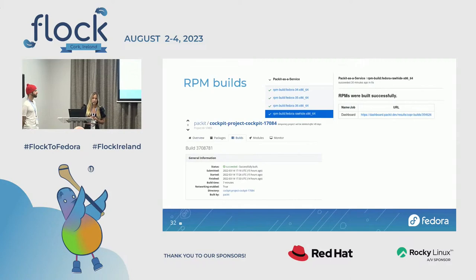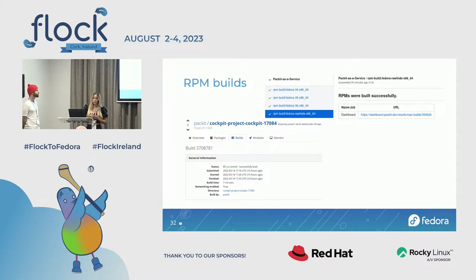After setup, what can Packit do for you? The most used job is RPM builds. For RPM builds, Packit uses the COPR build system. You can configure Packit to build your RPMs for any pull requests, commits, or releases. If configured to react on pull requests, with each new PR Packit forwards the code changes to COPR, the changes are built there, and Packit provides feedback about the builds in GitHub — with links to the COPR web UI, the logs, and everything you need.